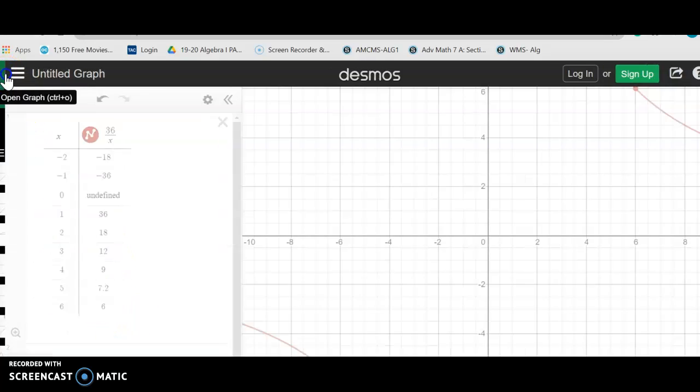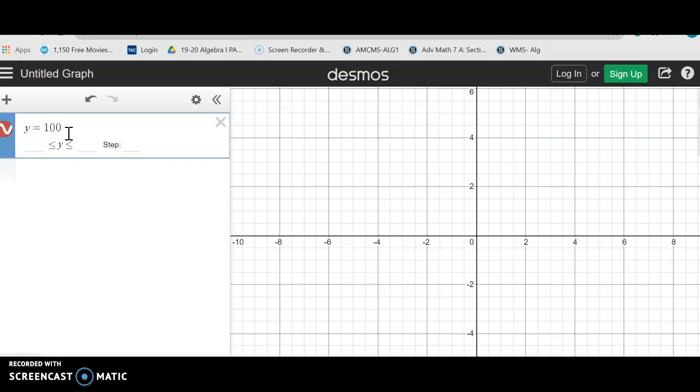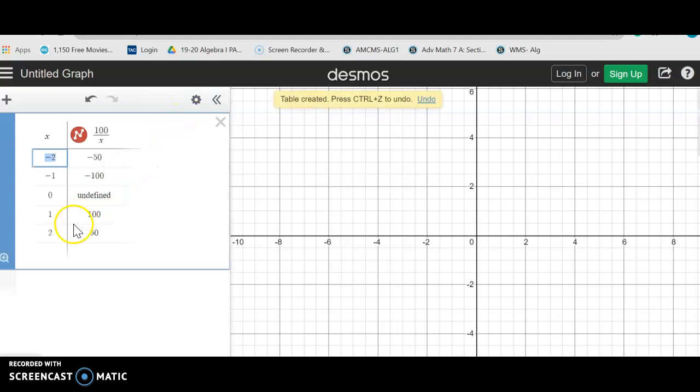Okay, I'm going to do another one. I'm going to clear the graph. If I wanted the factors of 100, I would do y equals 100 divided by x. There is a graph there. It's just too far off the graph to be noticed. I'm going to convert it to a table.